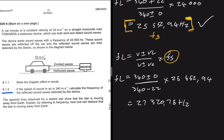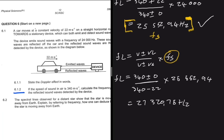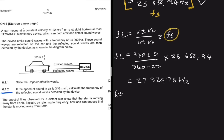For 6.2: the spectral lines for a distant star are shifted, indicating the star is moving away from Earth. You need to explain, referring to frequency, how this can be deduced. Please share your answer in the comments.